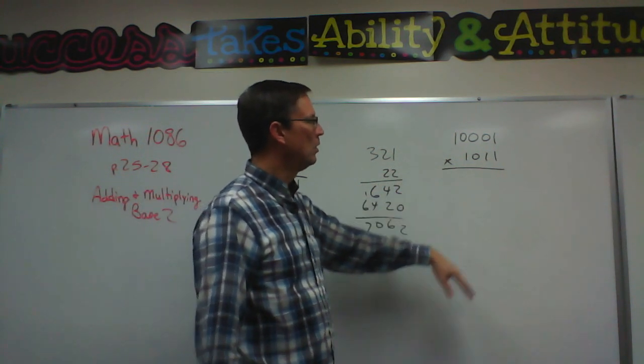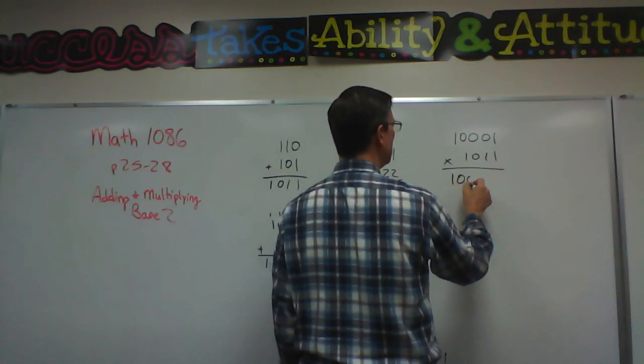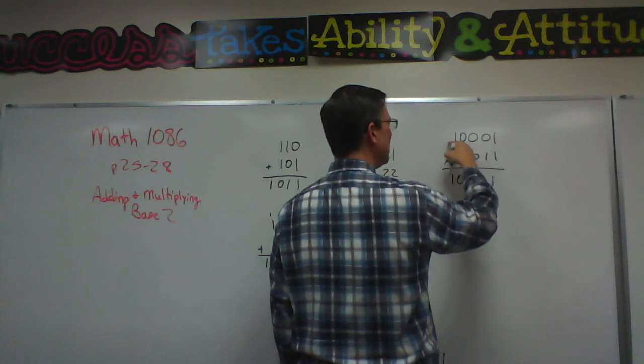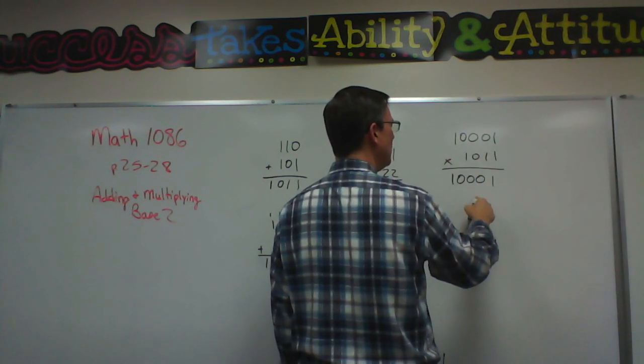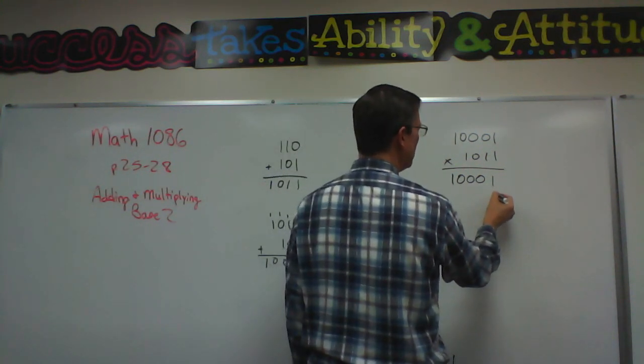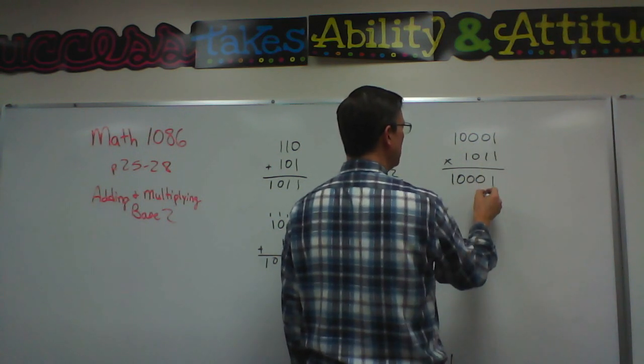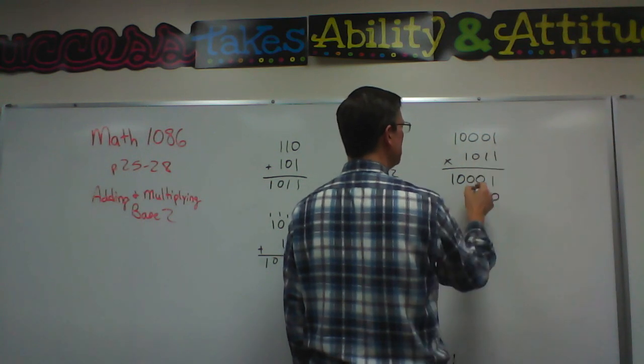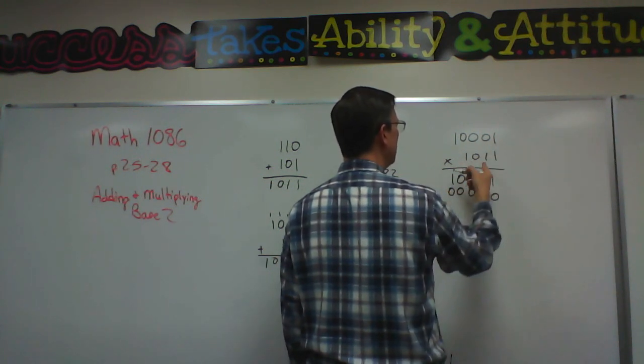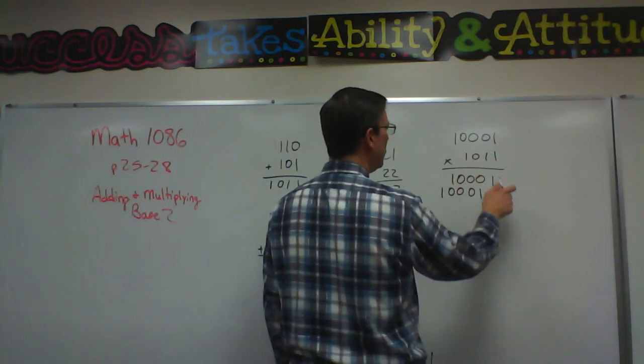We're going to do a very similar thing here. We're going to take the 1 times all of these, so 1, 0, 0, 0, 1. Now I'm going to multiply this 1 times all of these, but I move over one place value. If you want to put a 0 in there just to hold that place you can. So 1 times 1 is 1, 1 times 0 is 0, 1 times 0 is 0, 1 times 0 is 0, 1 times 1 is 1.